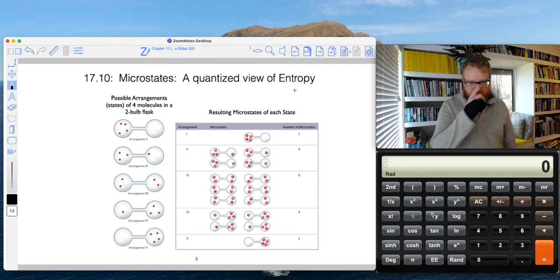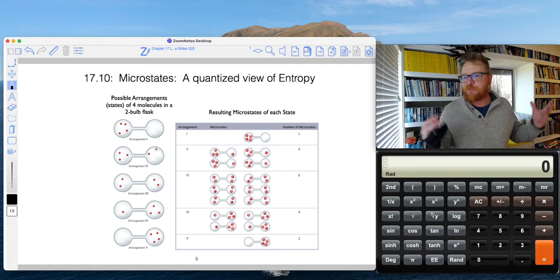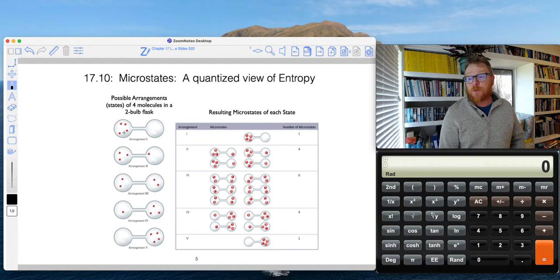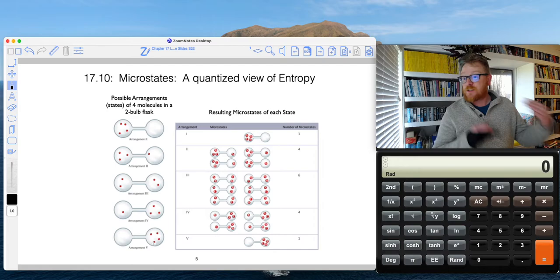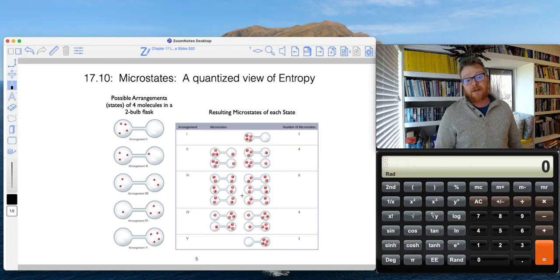So continuing along, what are these microstates? Here's a fun thought experiment to kind of get you thinking about what all these microstates are. Let's suppose we have this very simple two bulb flask, so a flask that has like two separate bulbs. And somehow magically we can put four, just only four molecules in the left most bulb, or maybe we can make it three and one and two and two and one and three or zero and four. Suppose we have this ability to do that.